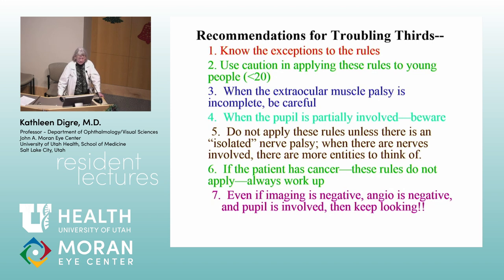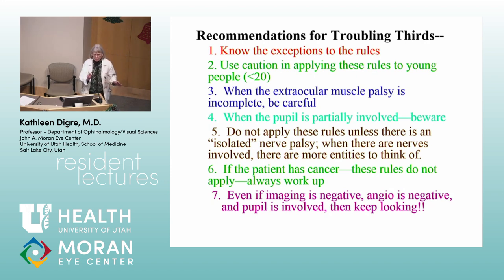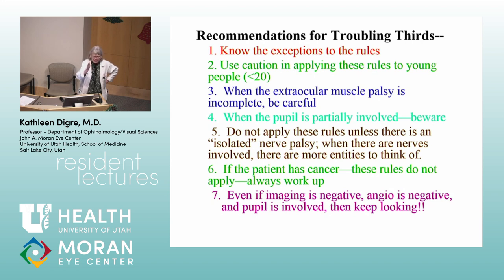To clarify what an incomplete third means: a partial third is where the lid isn't completely down, or only one or two muscles are really involved. For example, in that diabetic third I showed you — there was a little adduction, a little elevation, but complete ptosis and no pupil involvement. That's a complete third. The incomplete thirds — where the lid isn't completely down, or only some muscles are involved — those are the ones that are going to get you into trouble.